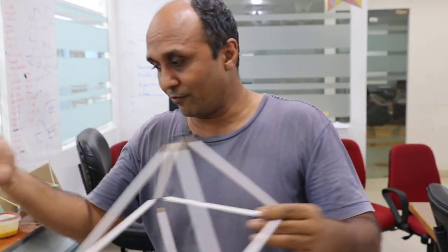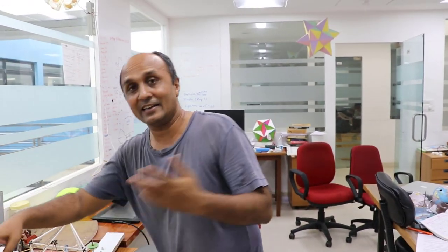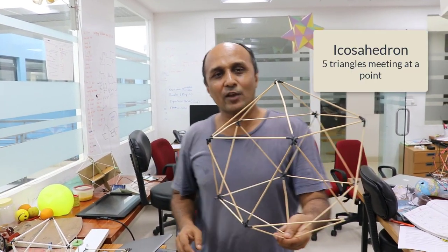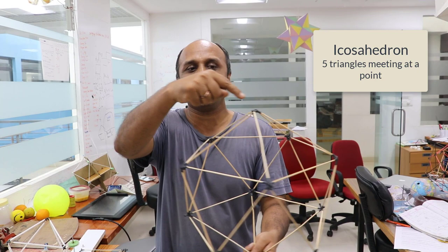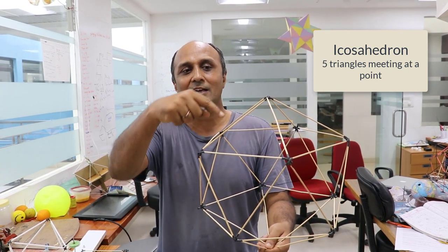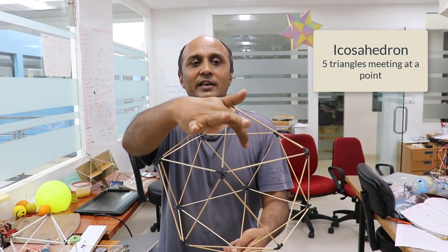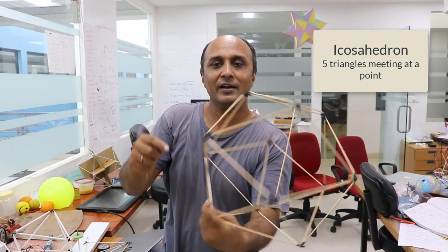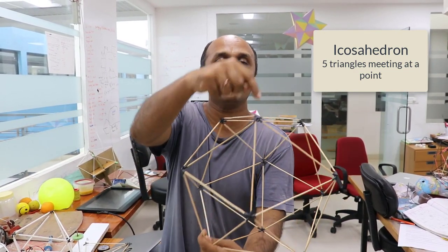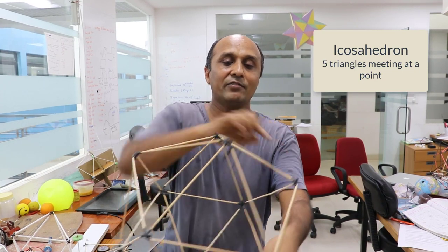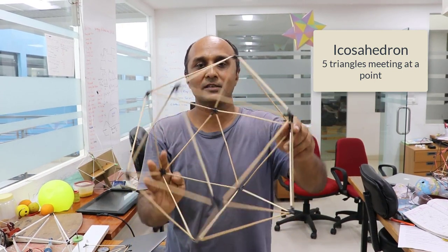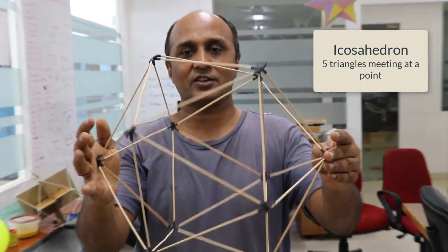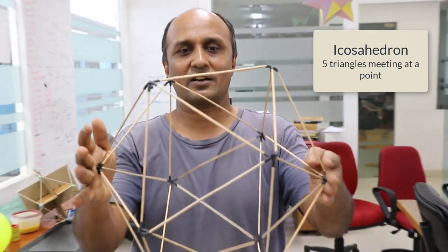Why stop at 4? Let's go on to 5. And this becomes very magical. This is called an icosahedron, where at each point there are 5 triangles meeting — 1, 2, 3, 4 and 5. I turn it like this — again 5. Turn it whichever way, every joint has 5 triangles meeting. It becomes a wonderful spherical-shaped structure.